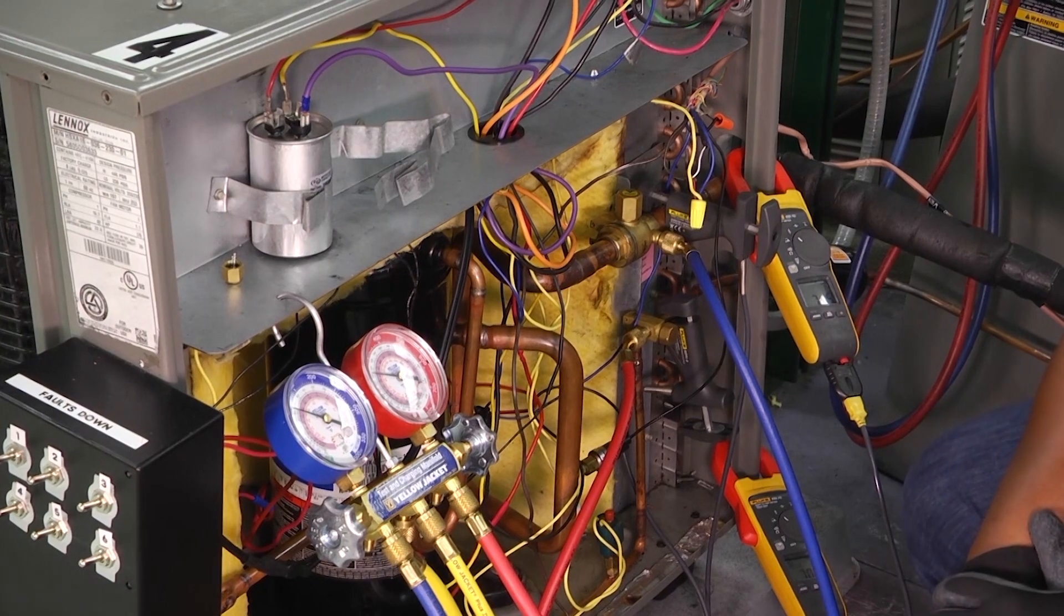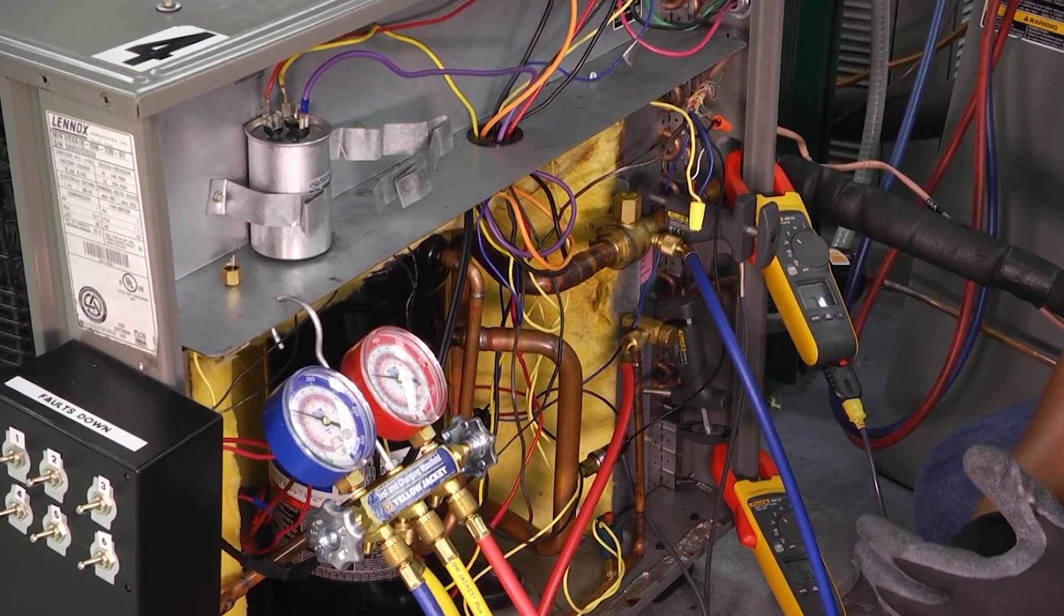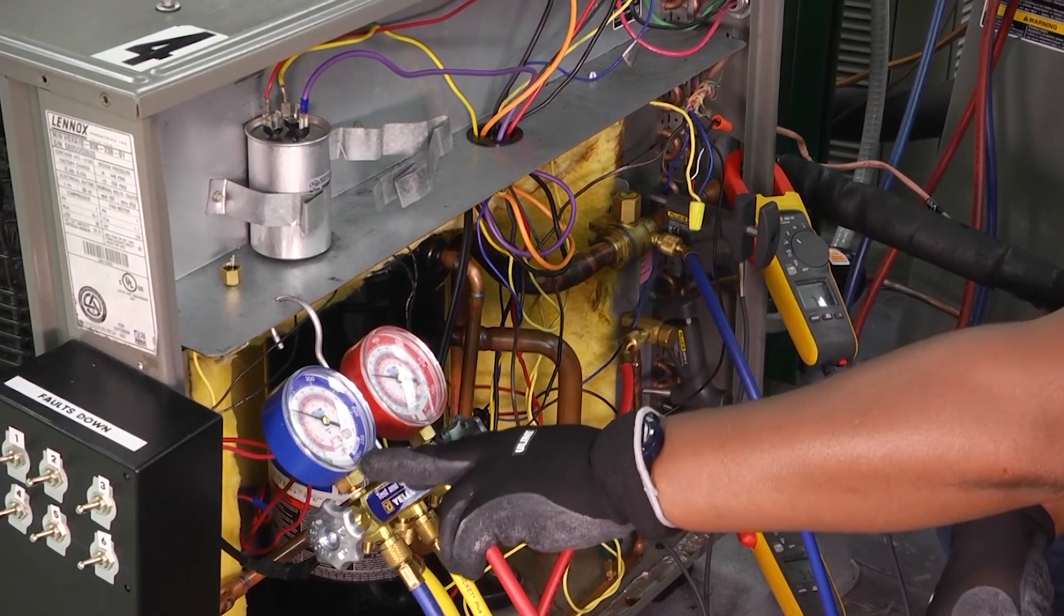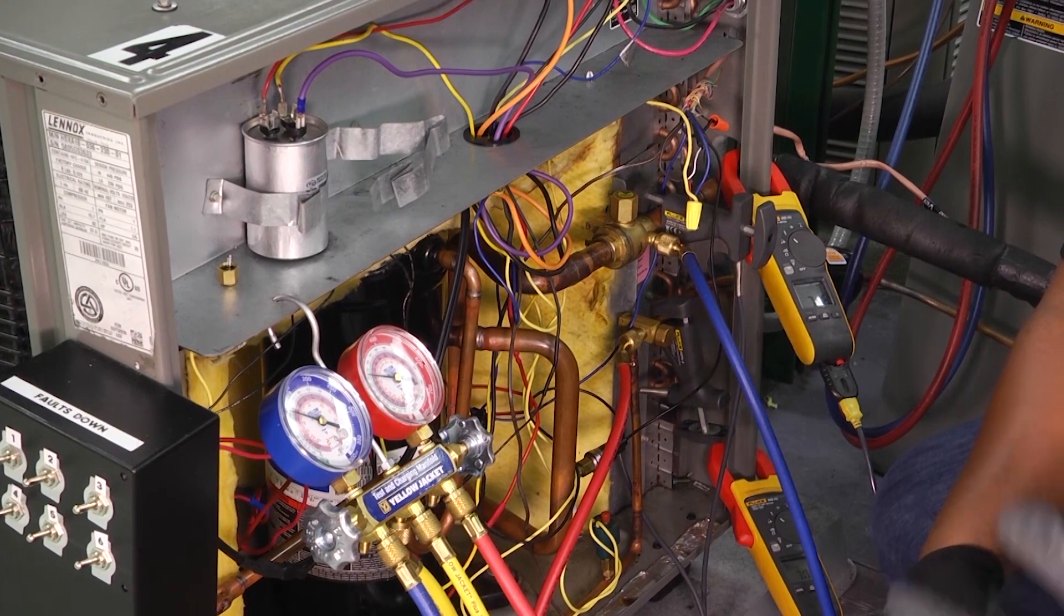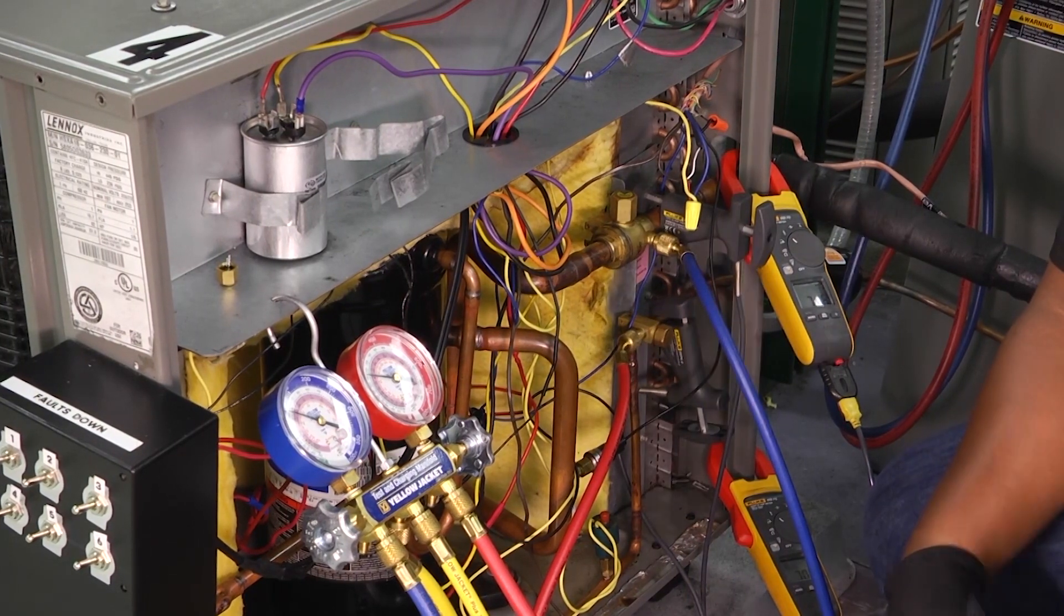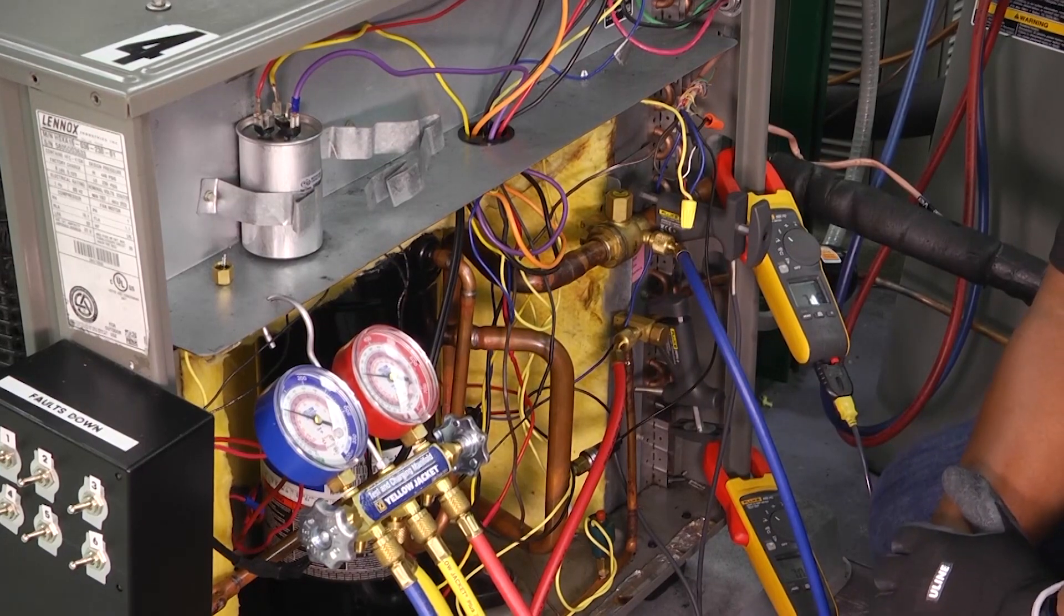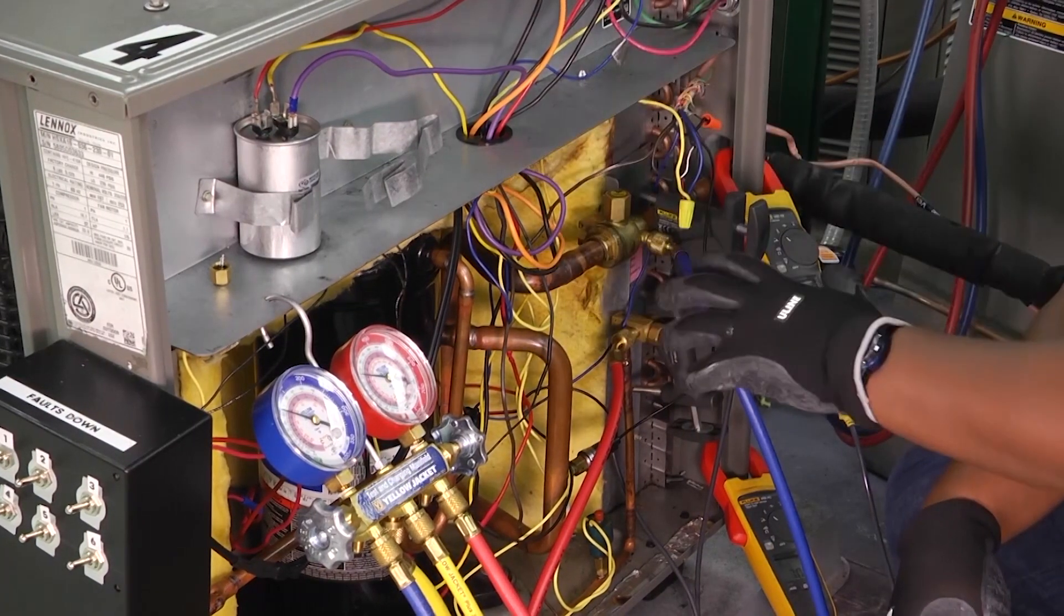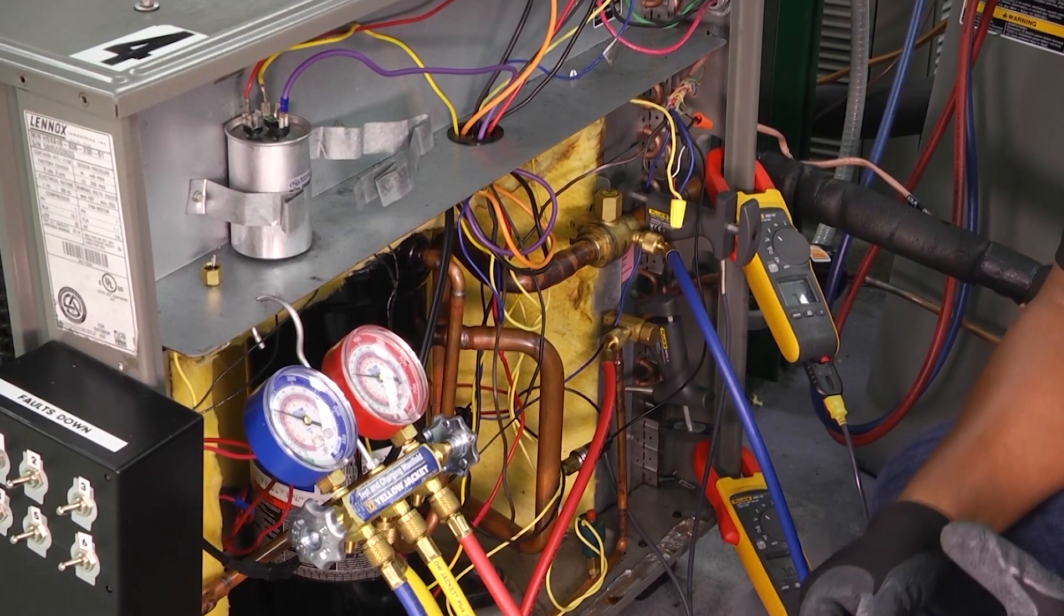When we talk about superheat and subcooling and what exactly it is, I always like to tell people to remember this: the blue side of our gauge is going to tell me everything that's happening inside on a split system, that would be at the evaporator coil. And the high side gauge or the red gauge is going to tell me everything that's happening with my outdoor unit.